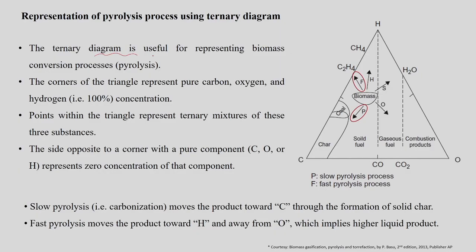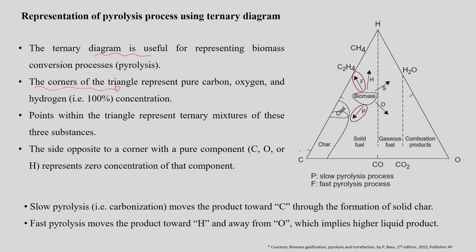Based on the heating rate, the pyrolysis process can also be represented using a ternary diagram, which is useful for representing biomass conversion processes. The corners of the triangle represent the carbon, hydrogen and oxygen content in the biomass sample, and points within the triangle represent ternary mixtures of these components. The side opposite to a corner represents zero concentration of that component — for example, the side opposite to C represents zero carbon concentration, where products like CO and CO2 are formed with no hydrogen, and the side opposite to H contains H2O with no carbon.